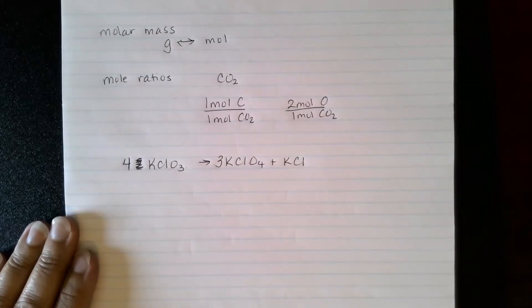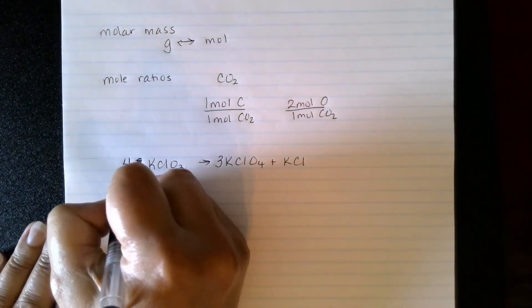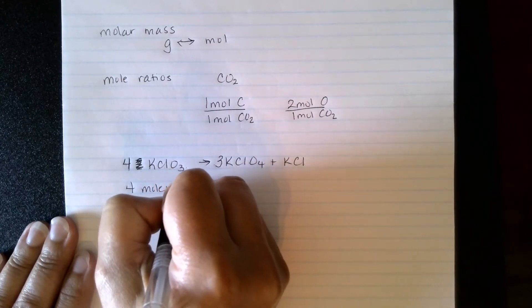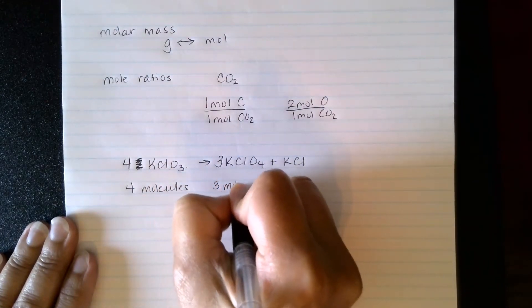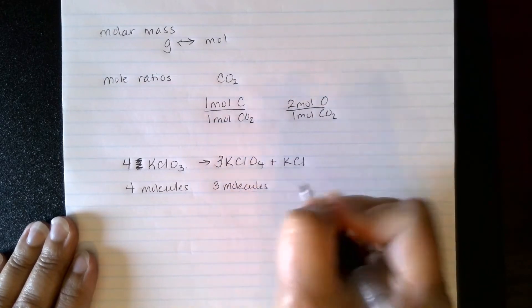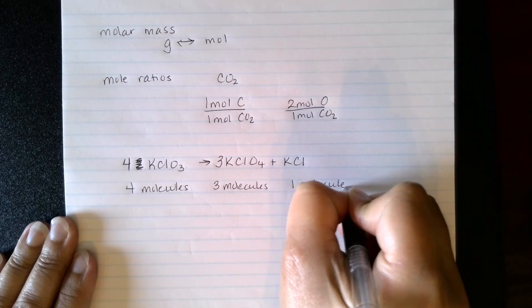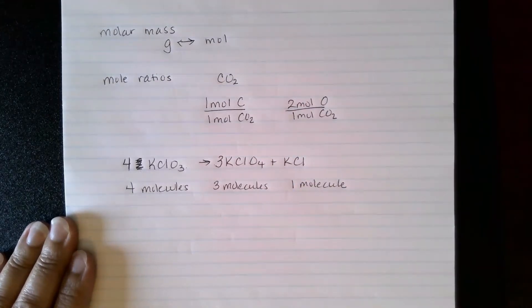Now what this relationship tells me is that if I have four molecules of this one, that I would make three molecules of this product, and I would make one molecule of that product.